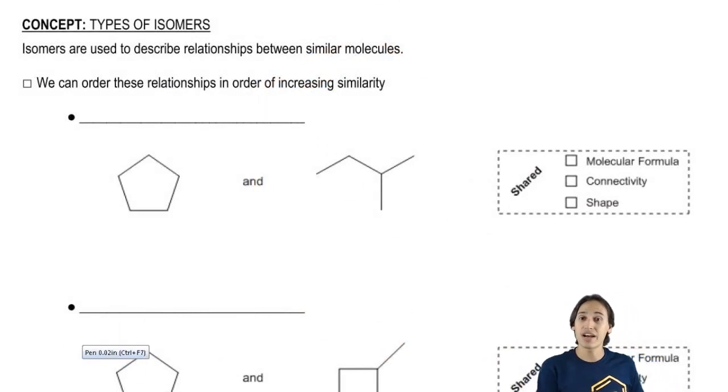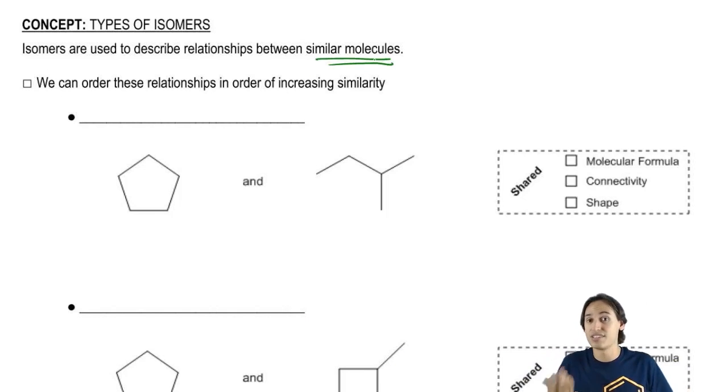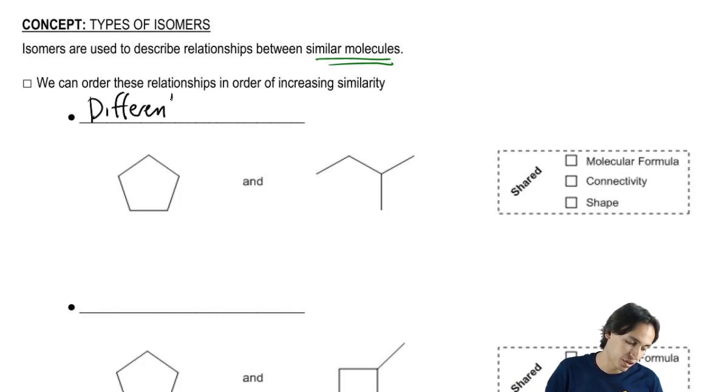So basically we use isomers to describe the relationships between similar molecules. We wouldn't even be talking about the concept of isomers if it weren't for the fact that some molecules look like they might be the same and we want to analyze are they the same or are they different. Well it turns out that we can order these in terms of the most different to the most similar. And the most different relationship that you can get between two molecules would actually just be different compounds.